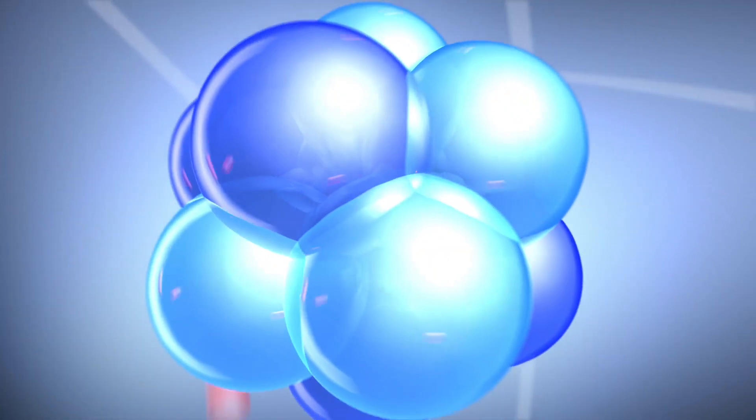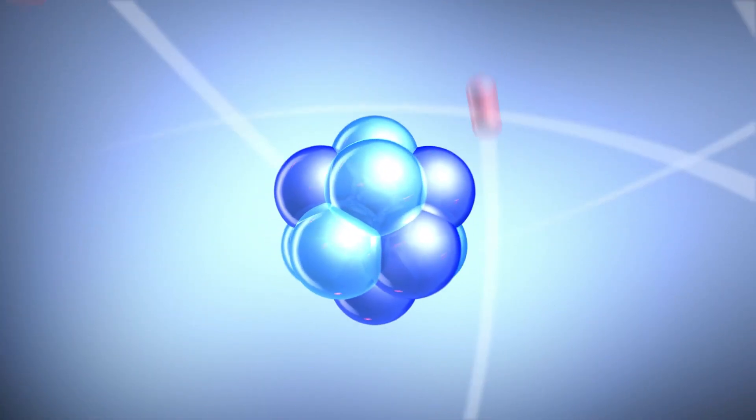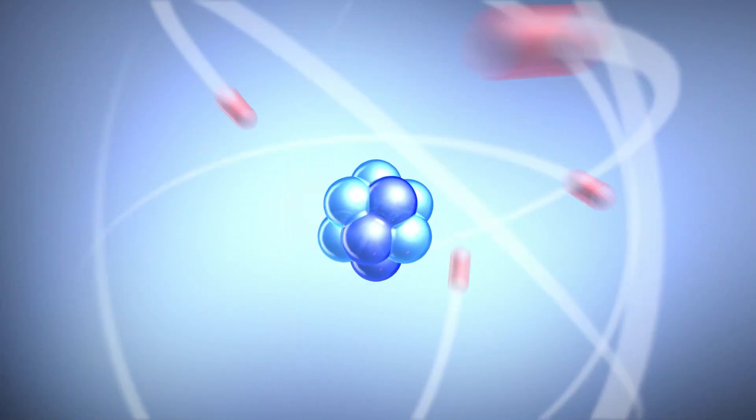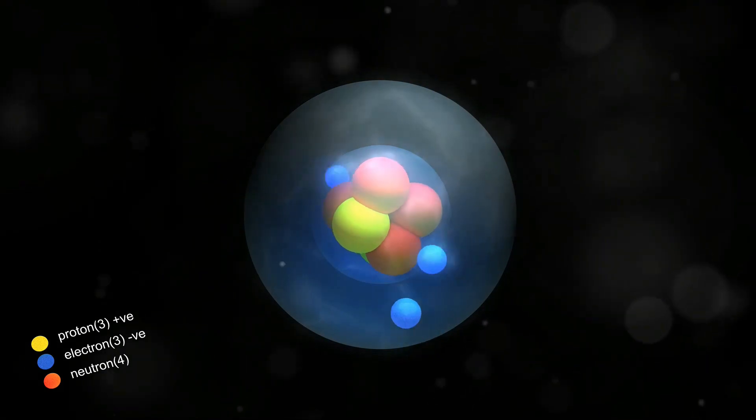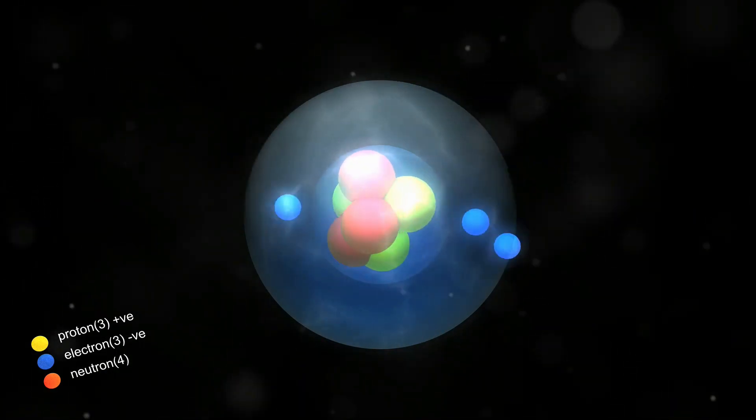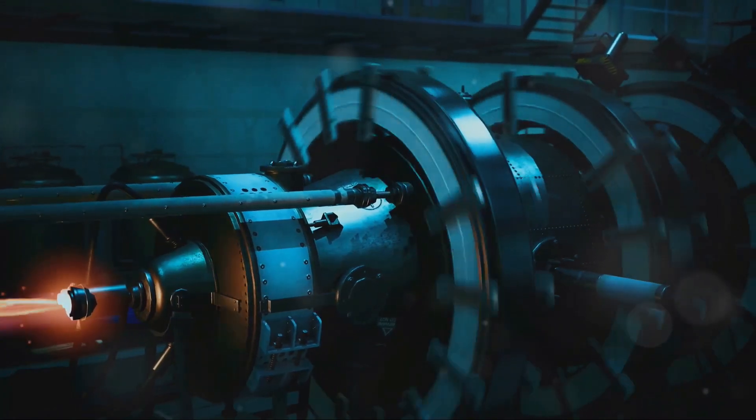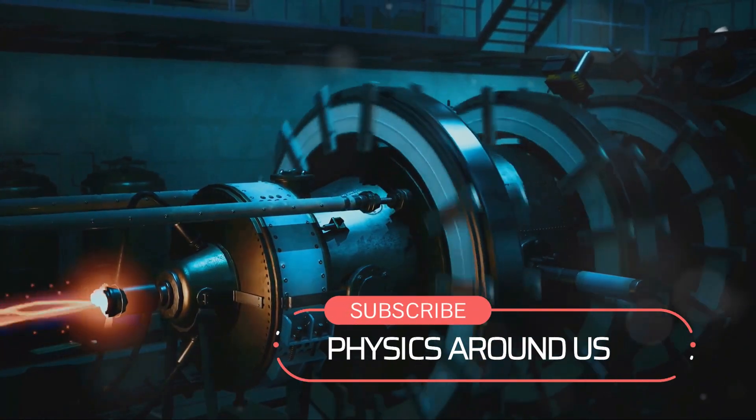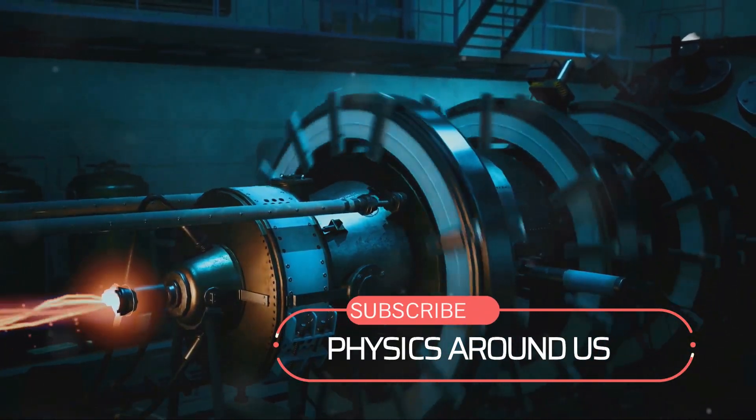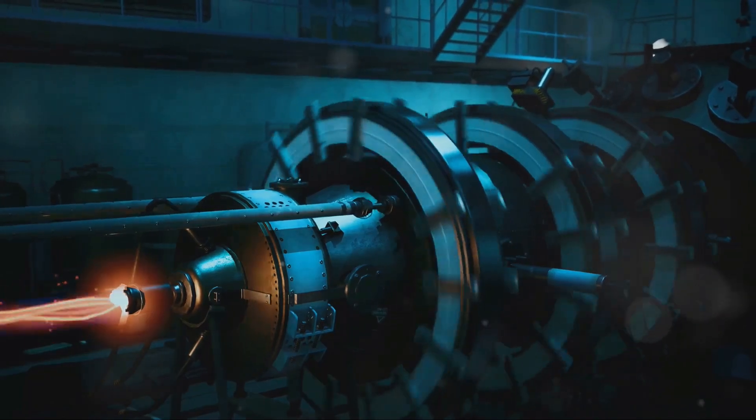Protons and neutrons have almost the same mass, roughly 1,836 times heavier than an electron. The mass of an atom is primarily concentrated in the nucleus due to these hefty particles. Understanding the properties of protons and neutrons is key to grasping concepts like nuclear fission and fusion, which power stars and some of our energy sources.